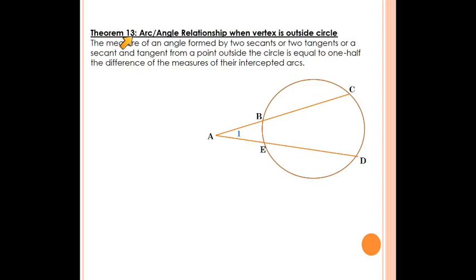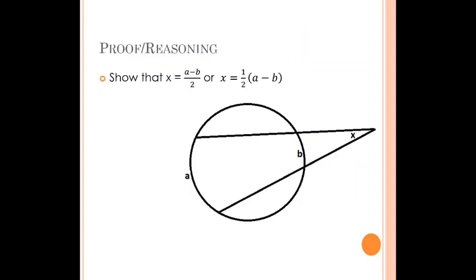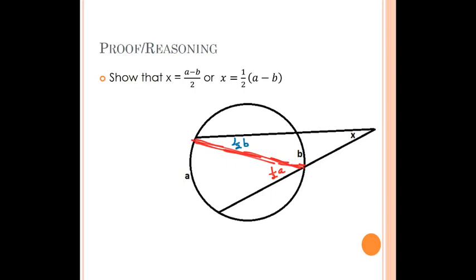The last theorem is Theorem 13: an angle outside the circle equals arc A minus arc B, all divided by two. I'll do another construction, drawing an auxiliary segment. This creates an inscribed angle inscribed to arc A, giving it a measure of one half A. It also creates another inscribed angle inscribed to arc B, giving it a measure of one half B.